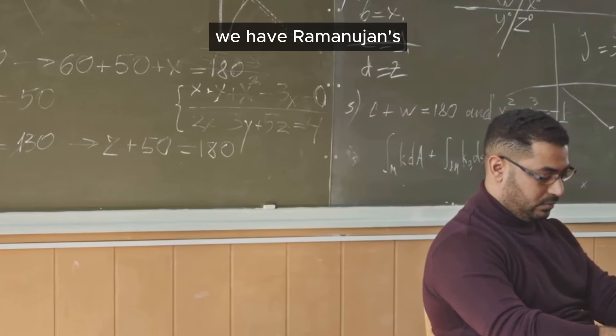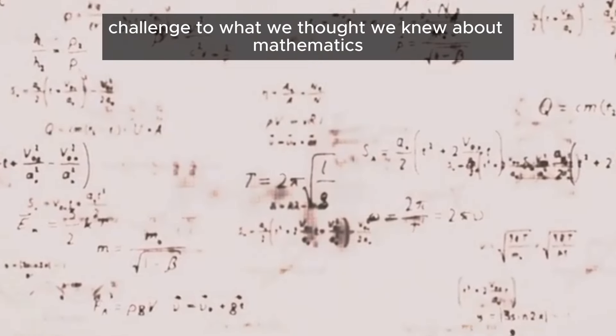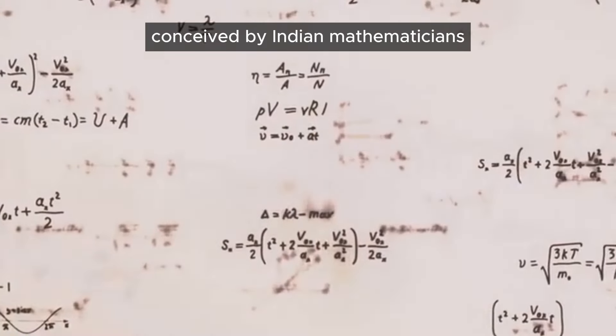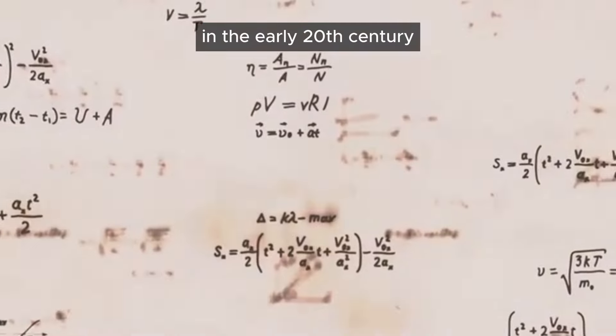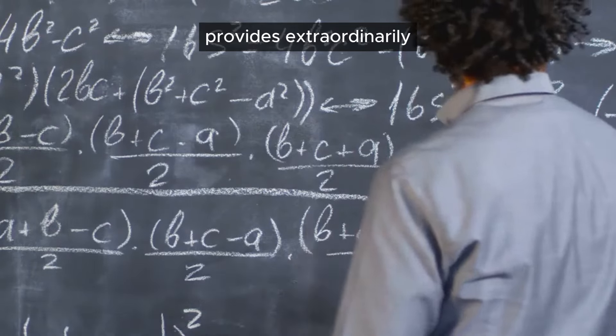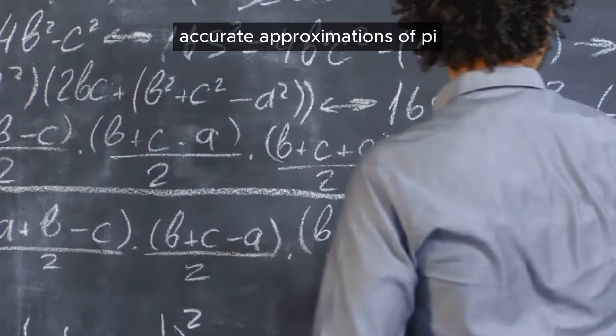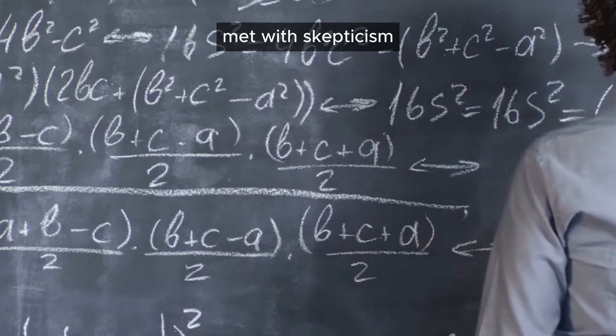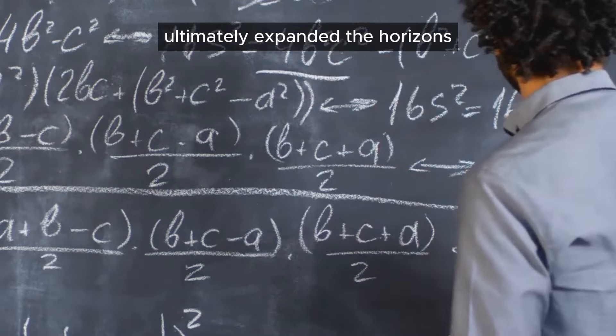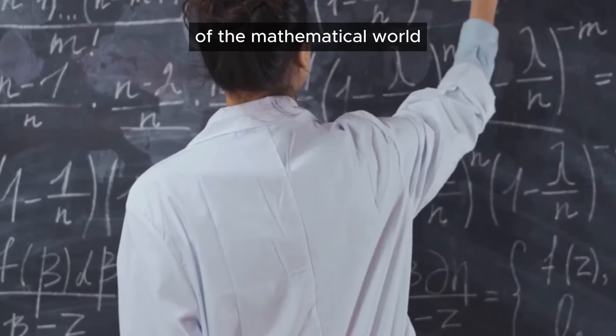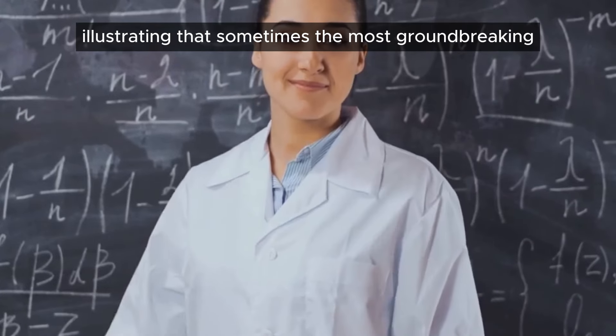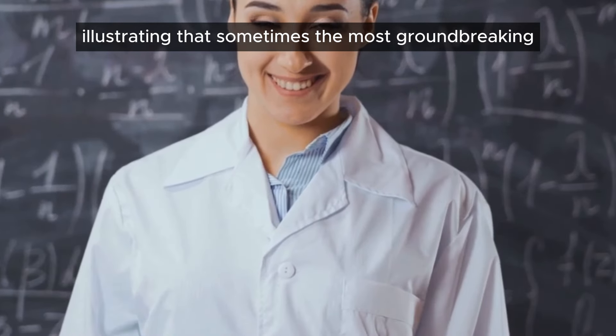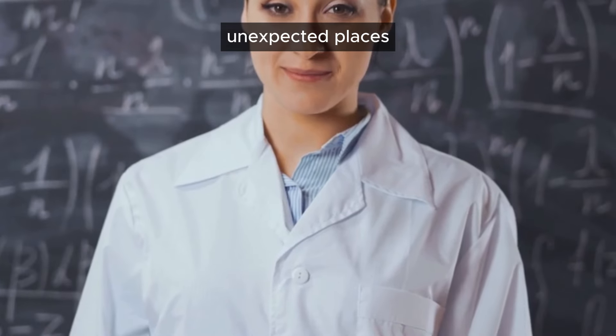Kicking things off, we have Ramanujan's Infinite Series, a fascinating challenge to what we thought we knew about mathematics. This series, conceived by Indian mathematician Srinivasa Ramanujan in the early 20th century, provides extraordinarily accurate approximations of PI. Ramanujan's work, though initially met with skepticism due to his lack of formal training, ultimately expanded the horizons of the mathematical world, illustrating that sometimes the most groundbreaking ideas can come from the most unexpected places.